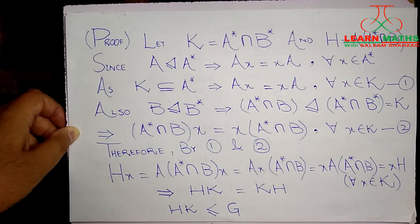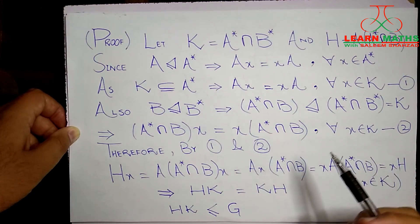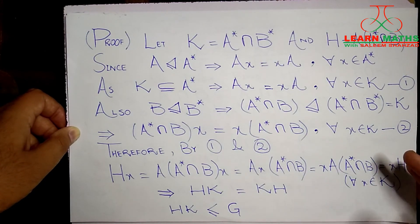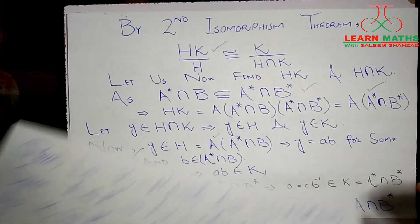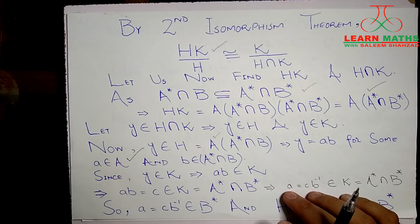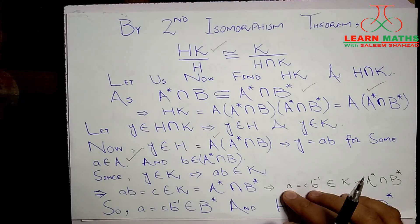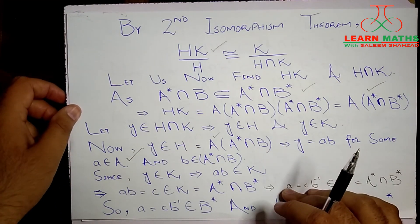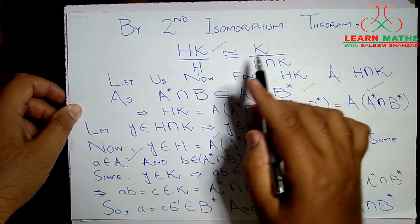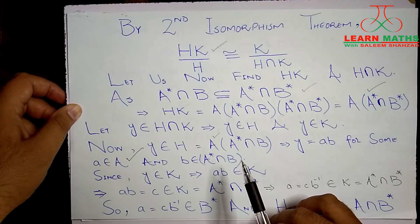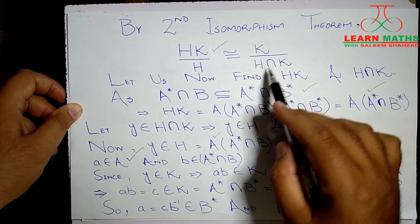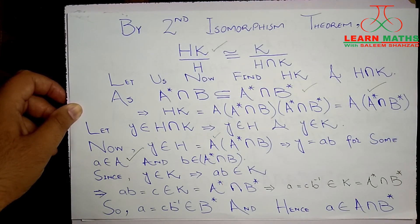Since HK = KH, HK is a subgroup of G, because H and K are both subgroups of G so their product is also a subgroup of G. We are doing all this in order to apply the Second Isomorphism Theorem, which states that HK/H is isomorphic to K/(H ∩ K). What remains is to find the values of HK and H ∩ K.